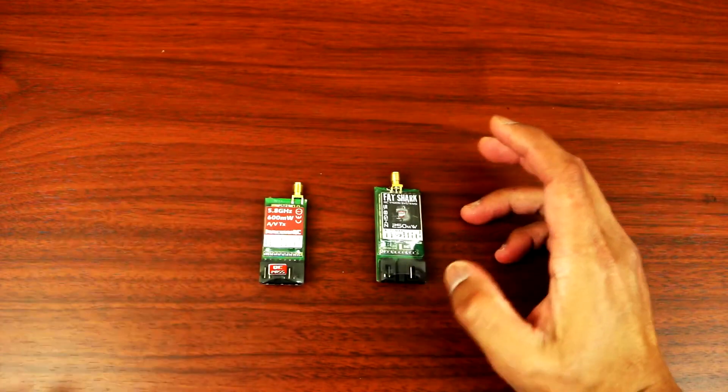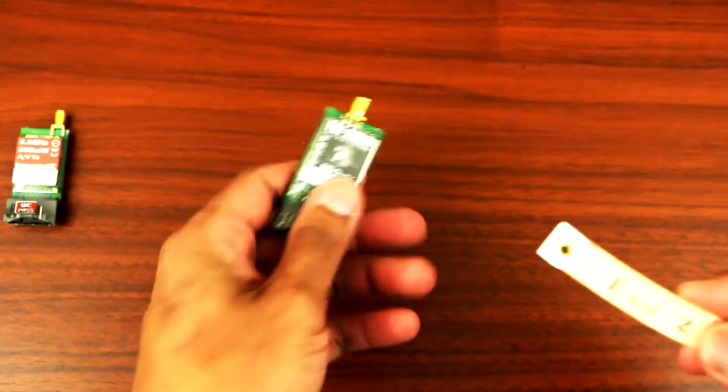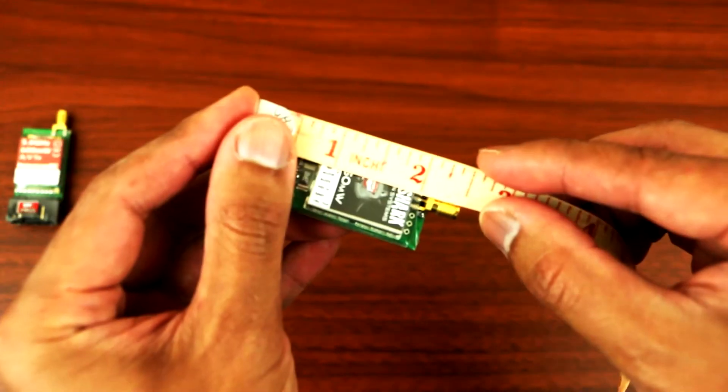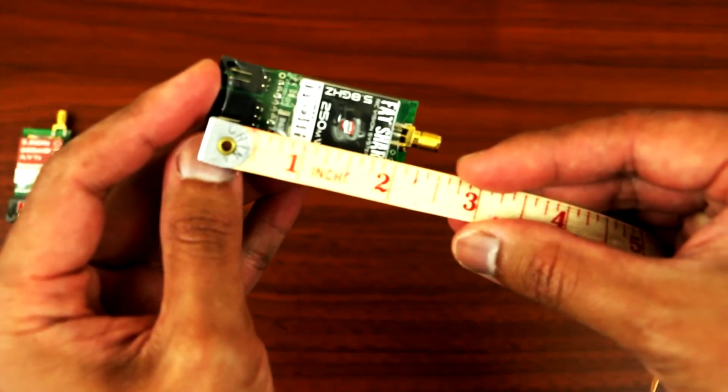Okay, so let's measure this up. For the width of the FatShark, one inch. Length, up to the antenna mount, is two and a half inches long.